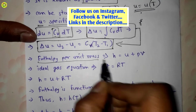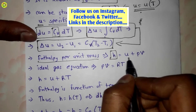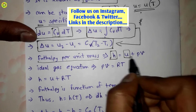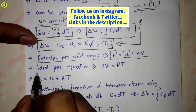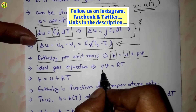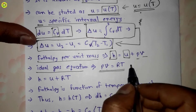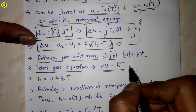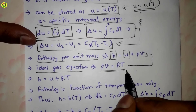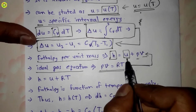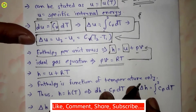Now, enthalpy per unit mass is denoted by small h, which is equal to u plus pv, where u is specific internal energy, p is pressure, and v is specific volume. As we know, the ideal gas equation is pv = RT. We substitute this value into the enthalpy equation, replacing pv with RT. So we get h = u + RT.